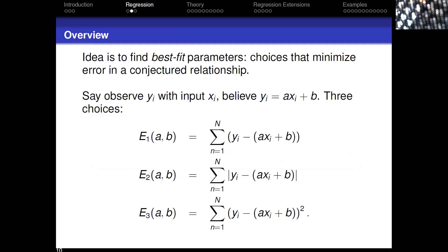Assuming y = ax + b, if you observe x_i you predict y should be ax_i + b. Here are three different choices for error. E1 is just the observed minus the predicted. E2 is the same but take the absolute value. E3 is the same but take the square.